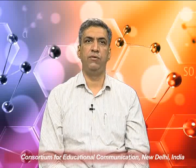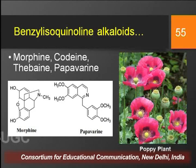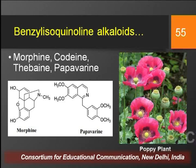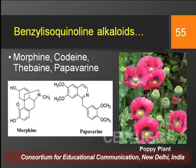The first subclass is benzyl isoquinoline alkaloids, with common examples being morphine, codeine, thebaine, and papaverine — obtained from the poppy plant Papaver somniferum and other Papaver species. Papaverine has a simple benzyl isoquinoline nucleus with two methoxy groups attached, whereas morphine has a complex benzyl isoquinoline structure, indicating the structural complexity and variation that exists within the same subclass.